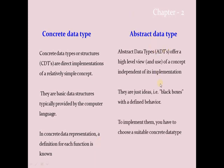Now we have some idea about abstract data type and concrete data type. Abstract data type is independent of its implementation. They are just ideas, called black boxes with a defined behavior. So they are all ideas — to implement them you have to choose a suitable concrete data type.